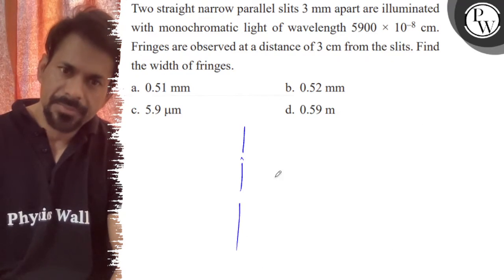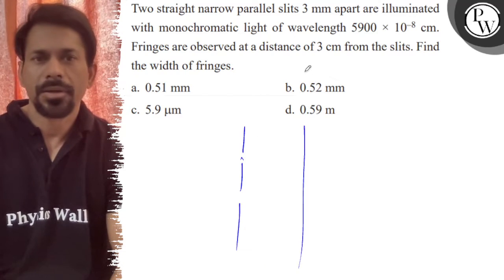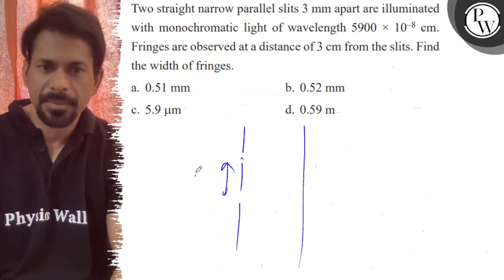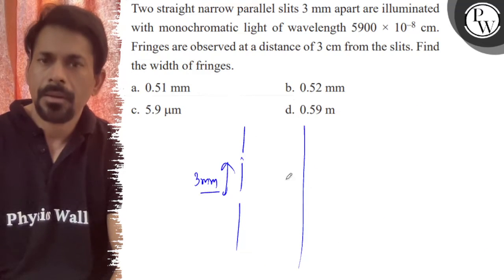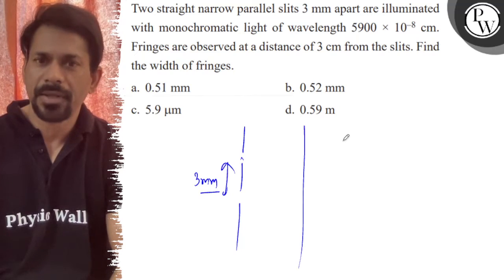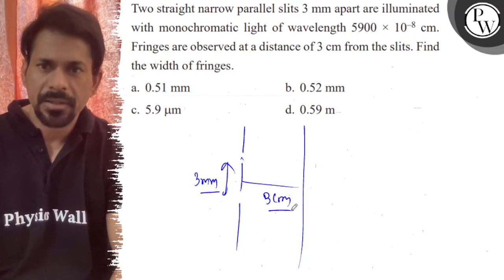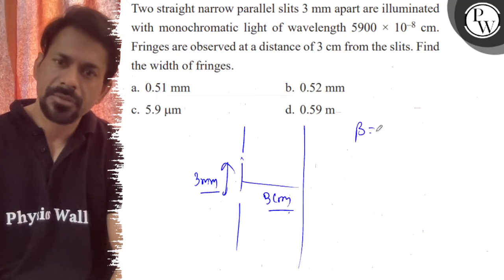We have 2 slits. This is said that it is 3 mm apart, illuminated with a monochromatic light. Fringes observed at a distance of 3 cm from the slits. This is 3 cm. Find the width of the slits.